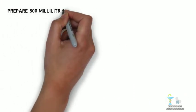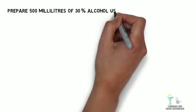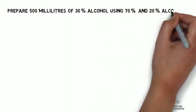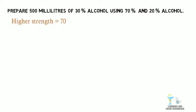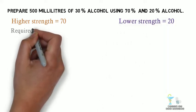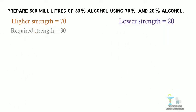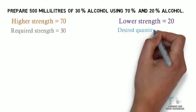Let us see an example problem. Prepare 500 ml of 30% alcohol using 70% and 20% alcohol. The higher strength is 70%, the lower strength is 20%, the required strength is 30%, and the desired quantity is 500 ml.